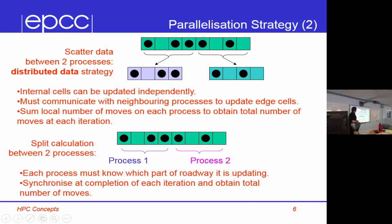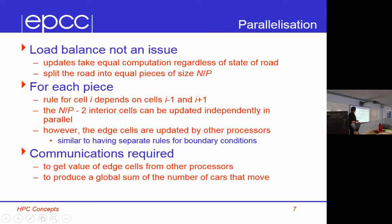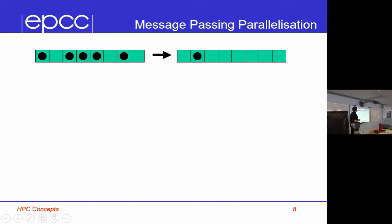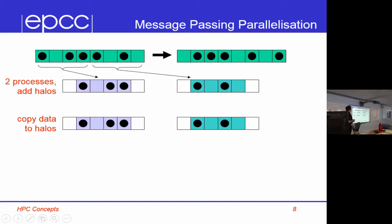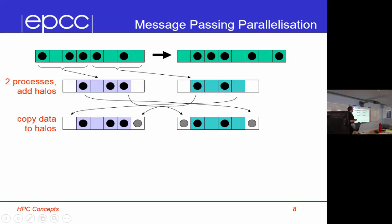In terms of message-passing parallelization, we take the road and split it. Each process has a halo, so instead of an array of length four it has an array of length six with ghost cells. The communication comes in when initializing these ghost cells — before doing any calculation, the boundary values are copied from neighbouring processes. In the serial code you copy locally; in the parallel code you do communication. Once you've done that, each process can run the same serial code on n/p cells.